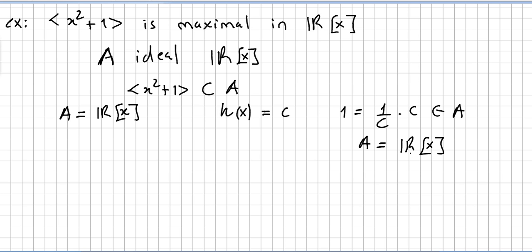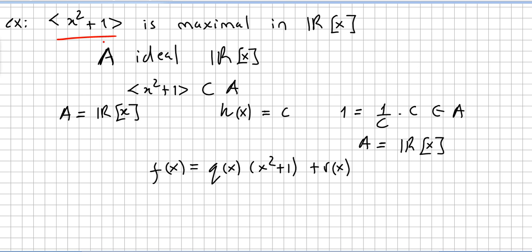You can use the same strategy as in the previous proof, showing that f(x) = q(x)·(x² + 1) + remainder. I'll leave this as an exercise: the ideal generated by x² + 1 is a maximal ideal in the polynomials with real coefficients.